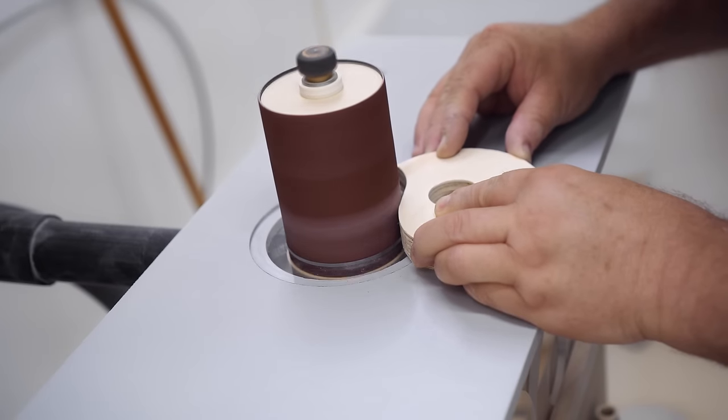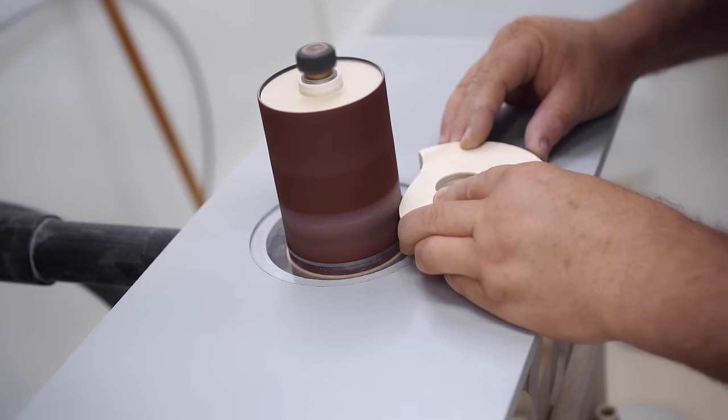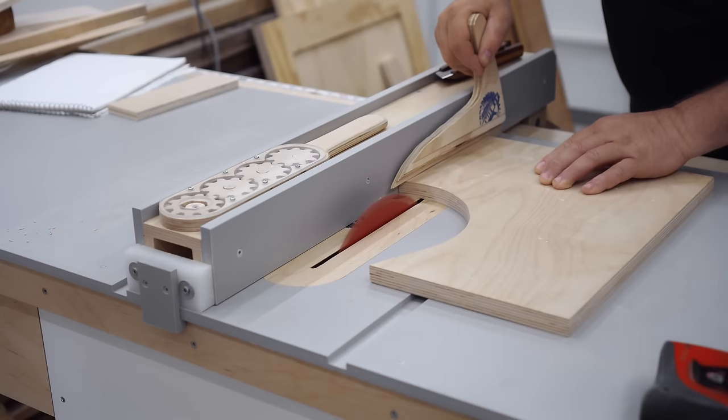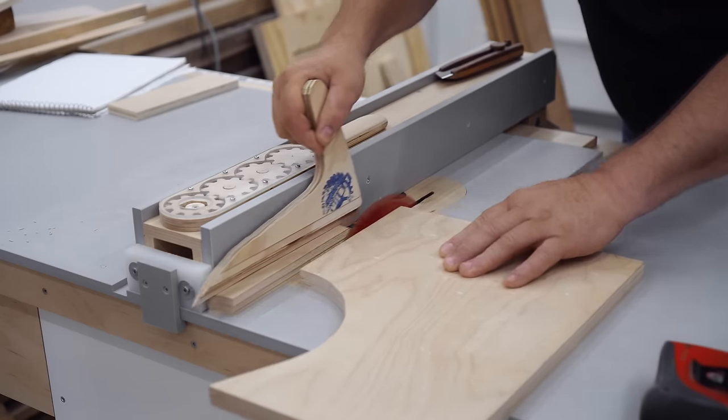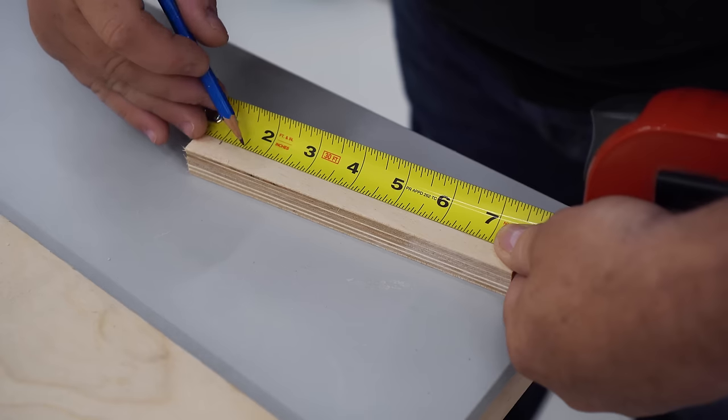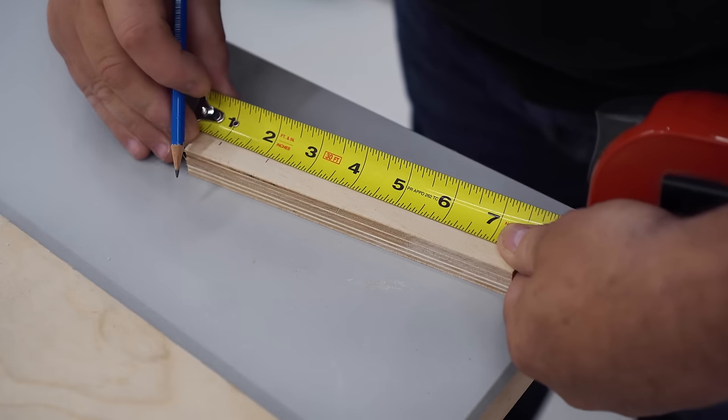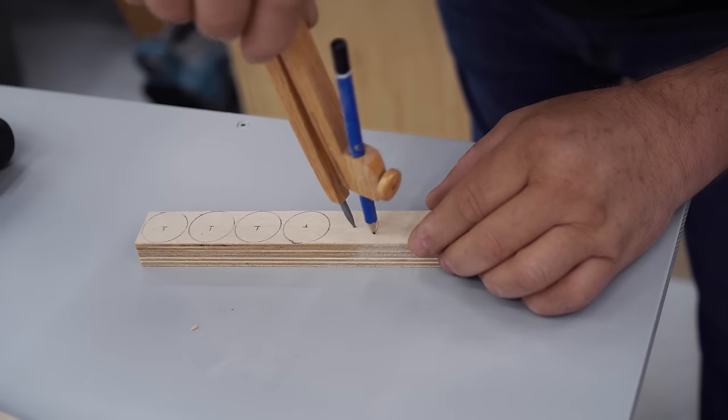So a big part of making one from scratch would be to figure out an easy way to make the sanding drums, and to make it fairly low cost. Even though you can buy the actual rubber sanding drums, they aren't cheap, and also they suffer from a problem of shrinkage, and that's a problem that I have with the original sander.